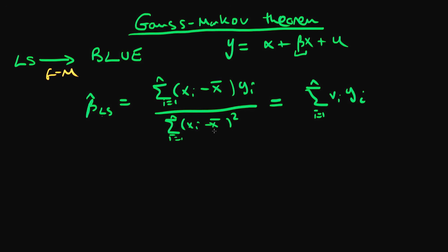Because essentially the way in which I've got my least squared estimates for the population parameter beta is by forming a linear sum of my dependent variables. Because these vi here are just numbers.